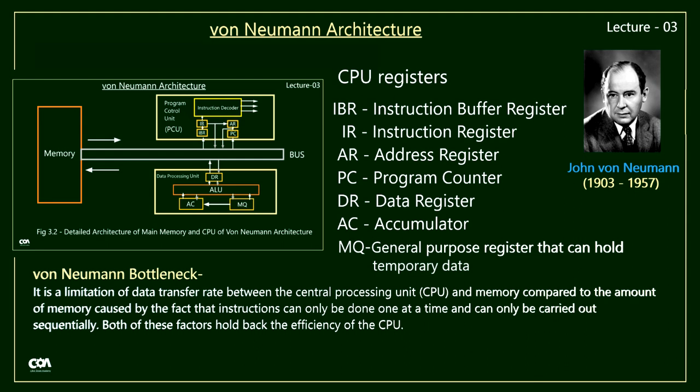You should also be familiar with the Von Neumann bottleneck. It is a limitation of the data transfer rate — the throughput between the CPU and memory compared to the amount of memory. There are two causes: first, instructions can only be executed one at a time; and second, they can only be carried out sequentially. Both of these factors hold back the efficiency of the CPU.